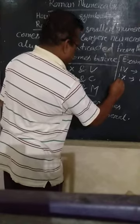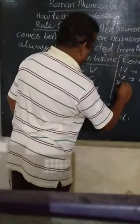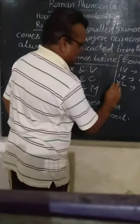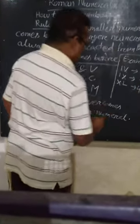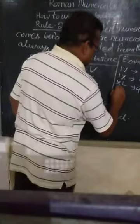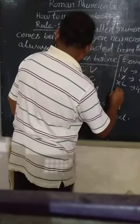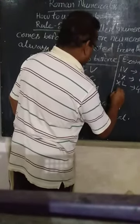Similarly, if X will come before L, then 50 minus 10, that means 40. If L comes before, sorry, X comes before C, then it will be 90.